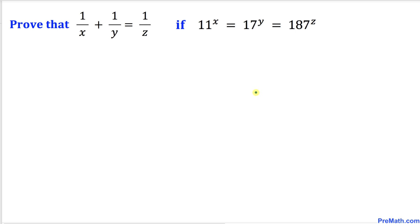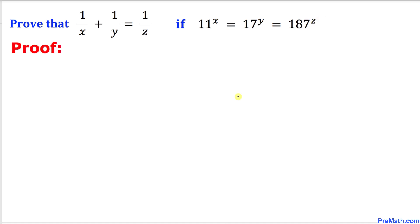Welcome to pre-math. In this video tutorial we are going to prove that 1 over x plus 1 over y equals 1 over z, given that 11^x equals 17^y equals 187^z.